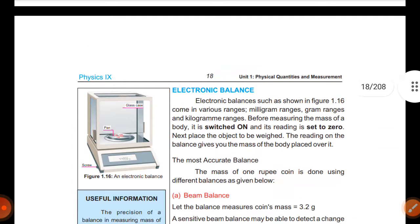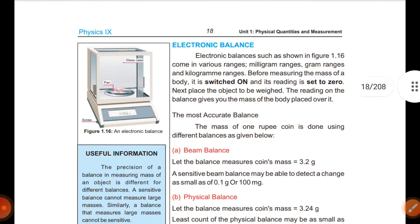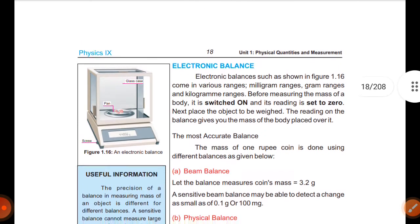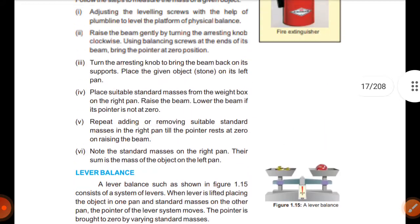In the last videos, we discussed the physical quantity of length. We have different methods to measure length using vernier calipers, tape measure, meter rule, and micrometer screw gauge. After that, in the last video we discussed how to measure the physical property of mass or weight using different instruments like electronic balance and other devices.